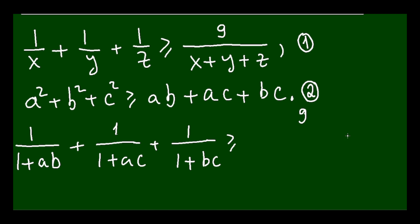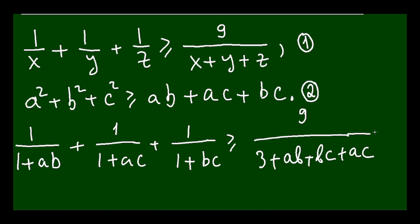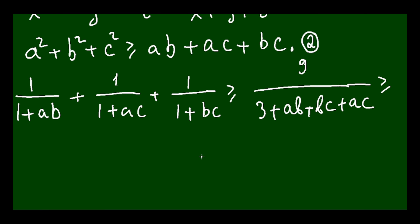...9 over (3 + ab + bc + ac). Then, applying the second formula, this will be more than or equal to 9 over (3 + a² + b² + c²).